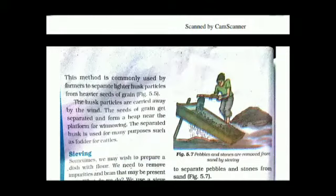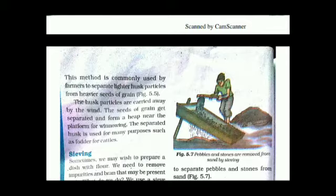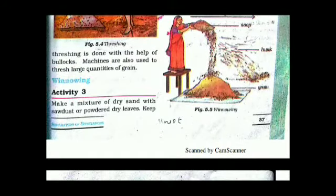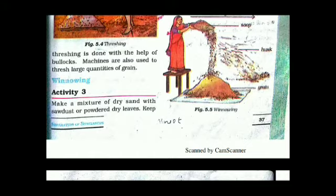Winnowing is used to separate lighter husk particles from the heavier seeds of grain. The lighter husk particles are carried away by the wind, and the seeds of grain get separated and form a heap near the platform. This method is used to separate heavier and lighter components of a mixture.